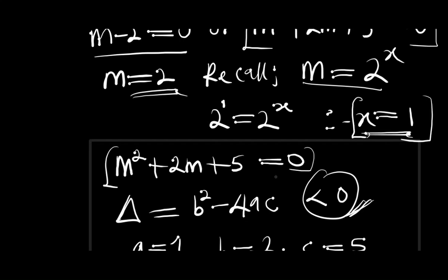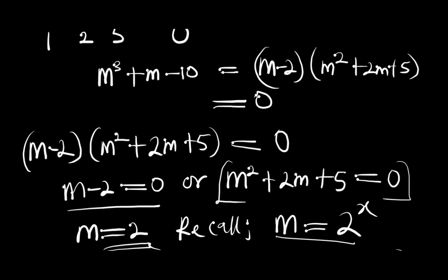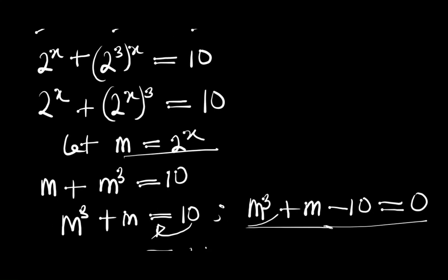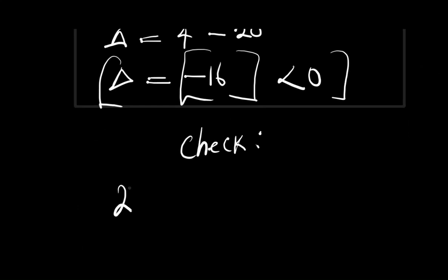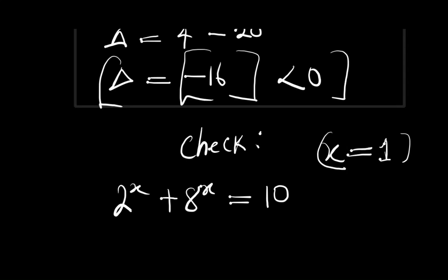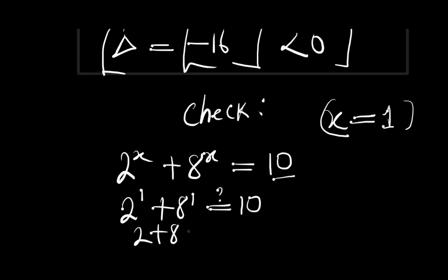Let's verify this solution. Substituting x = 1 back into the original equation 2^x + 8^x = 10: we get 2^1 + 8^1 = 2 + 8 = 10. This confirms that x = 1 satisfies the equation. Therefore, x = 1 is the only real solution. Thank you and goodbye.